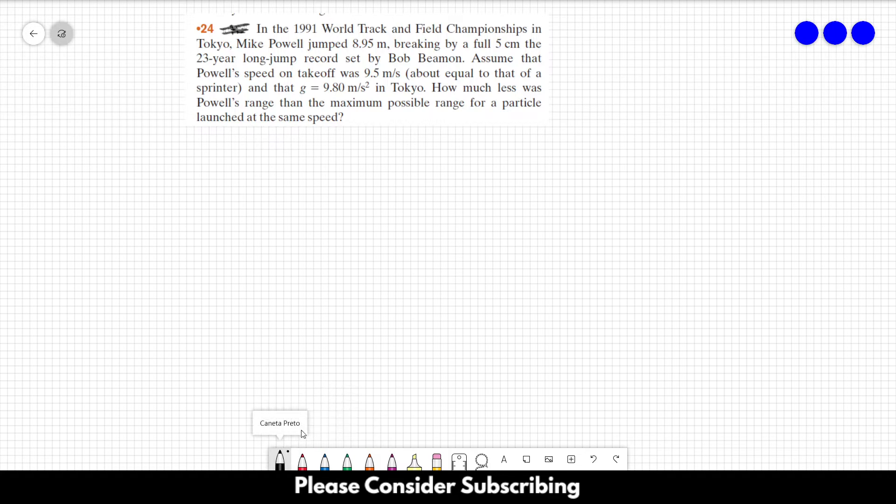Assume that Powell's speed on takeoff was 9.5 meters per second, about equal to that of a sprinter, and that G equals 9.8 meters per second in Tokyo. How much less was Powell's range than the maximum possible range for a particle launched at the same speed?